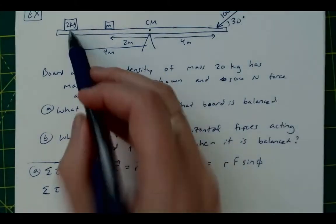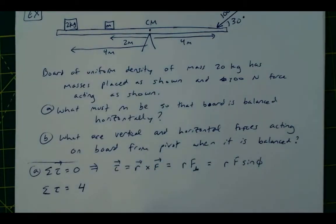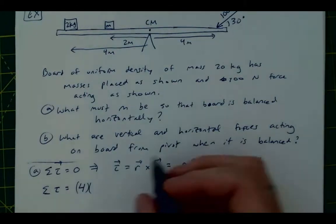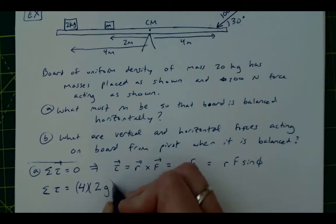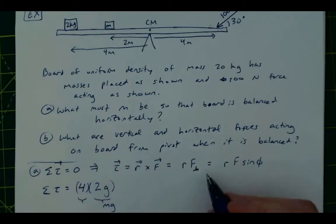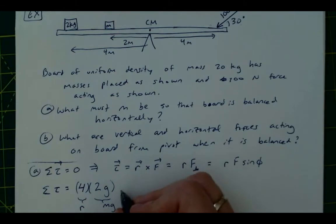so then we can say that the sum of torques then is going to be equal to, and let's put these as the positive direction for a counter-clockwise direction. Again, it doesn't matter which you choose as long as you choose an opposite sign for these as for these, because they're causing different types of rotation and they need to be balanced. So for this one here, the 2 kilogram, we know that it's going to be a distance of 4 meters away,